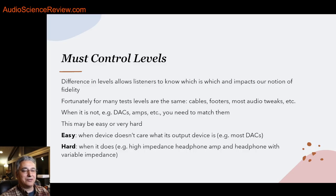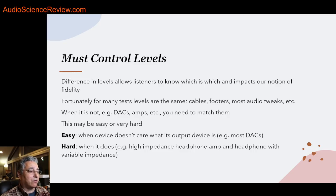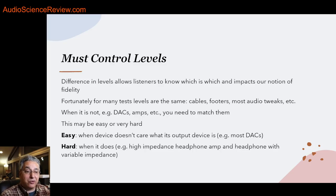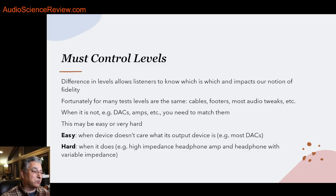Absolutely critical that you match levels. Unfortunately this is a bit technical. If you can't do this, don't do the test — this is one of the things Paul did wrong. Fortunately, many blind tests can be done without worrying about levels. That's the easy case: power cables, tweaks, stands, or footers — things that basically cannot and will not change levels. It's good to check levels anyway, but not always necessary for digital cables. Streamers can resample audio, so there's a remote chance levels may change. And many of the fights in audio are around things that are basically impossible to cause any change in levels.